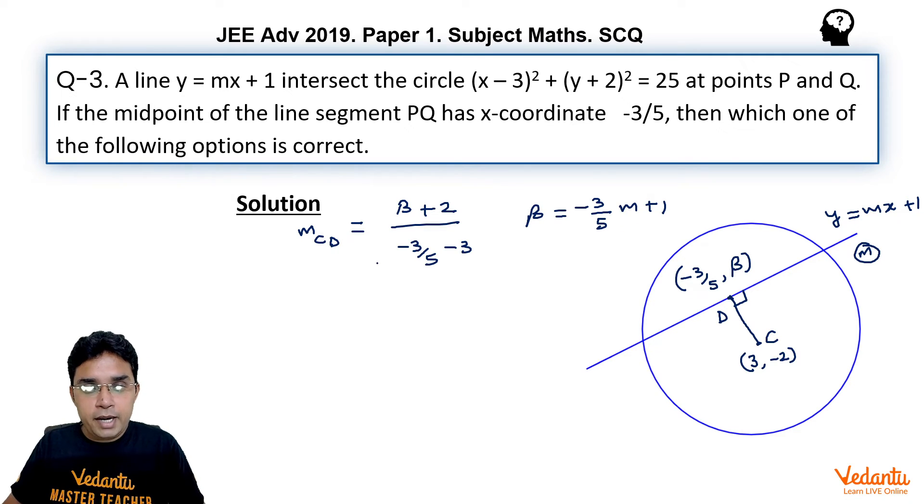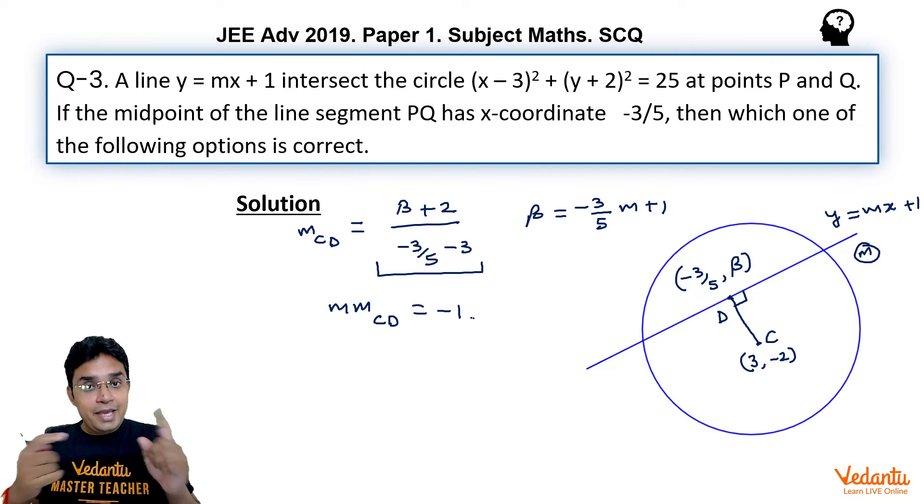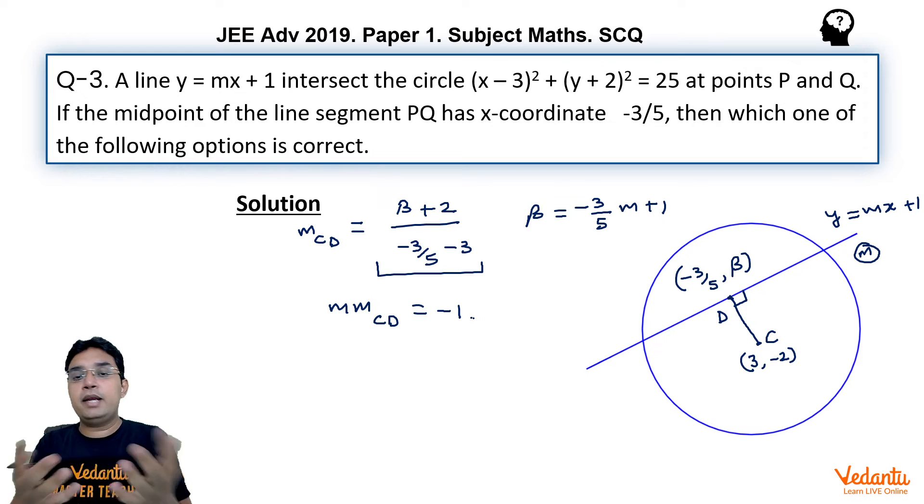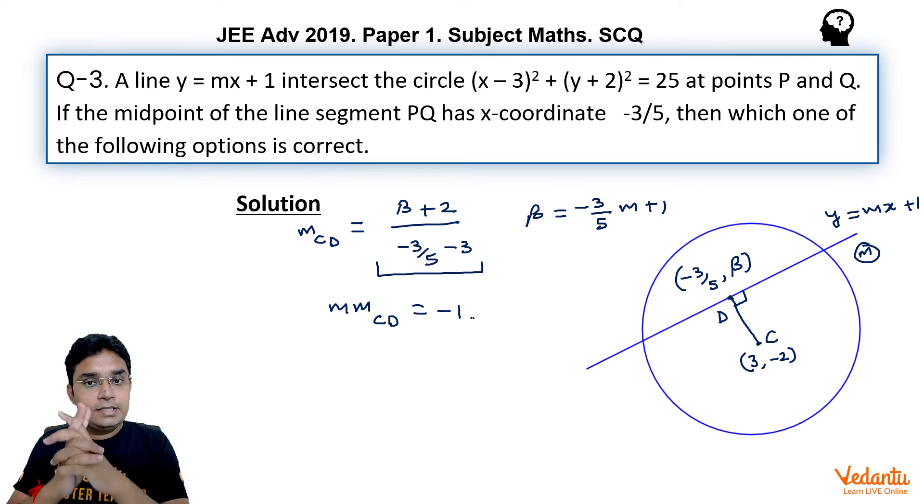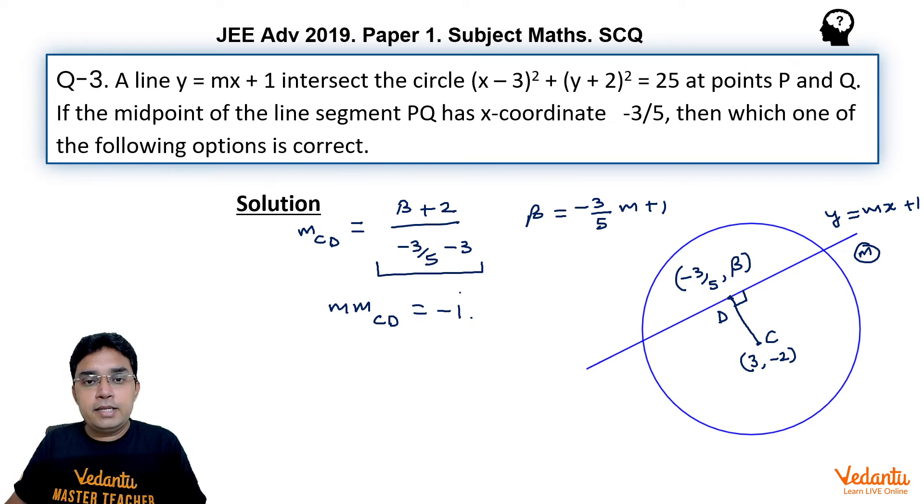Now, you get this slope in terms of m, you have slope of this line also in terms of m. So using the fact m into m_CD equals minus 1, we will again get same quadratic and we can get the value of m. So that is the second method. In fact, we can also do this question by one more method, that is chord bisected at given point using T equals S₁. I am leaving this method for you to do, but again you will get same quadratic and you can get same values of m.